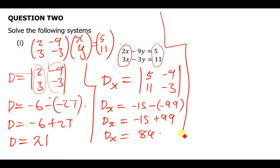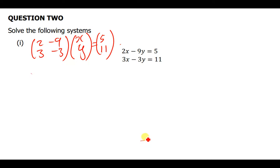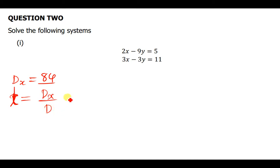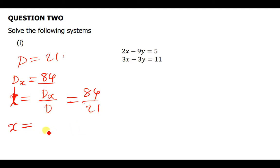From here we can find the value of x. dx was found to be 84. x is found by dx over d, so that is 84 over 21. Dividing that, the value of x is equal to 4.